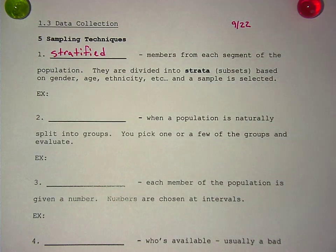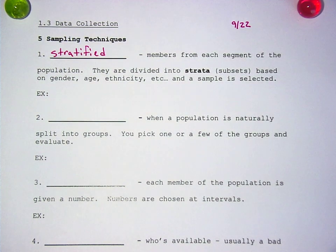That's when you take members from each segment of the population, and they're divided into strata or subsets based on gender, age, ethnicity, etc., and then a sample is selected.